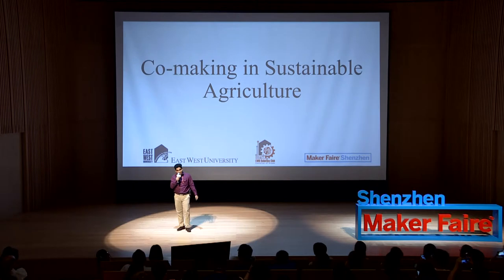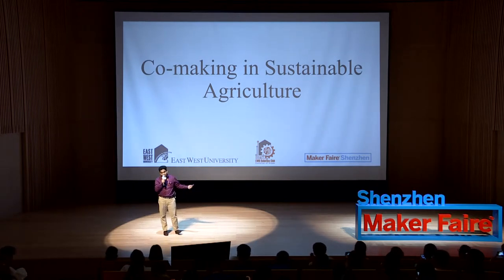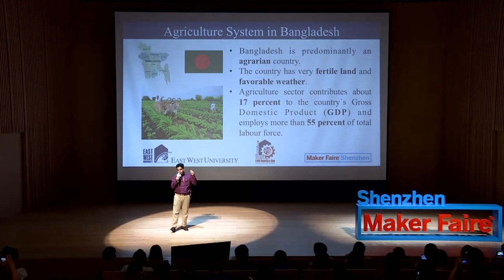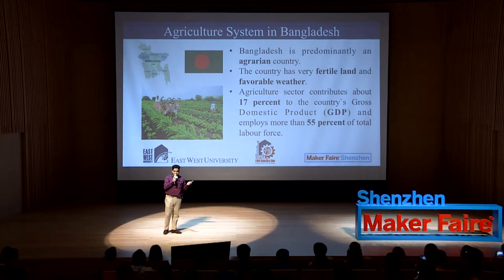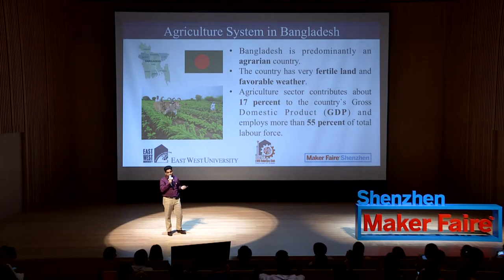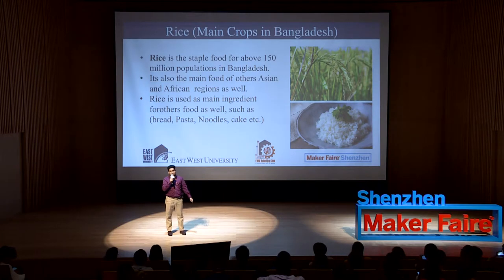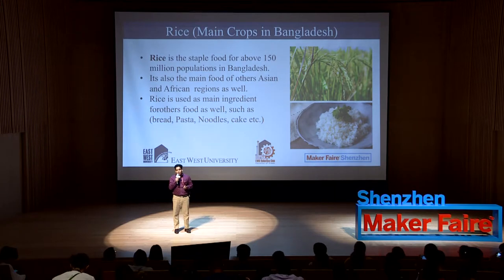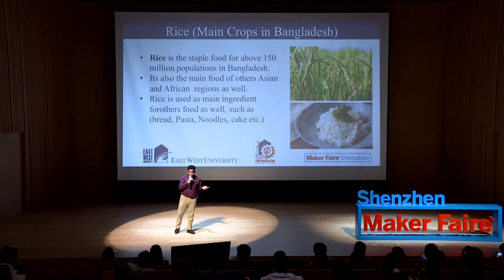Now, what about co-making in sustainable agriculture? I am presenting co-making in sustainable agriculture because this is important for us and our country. Bangladesh is most probably an agrarian country because of its favorable weather and very fertile land. The agriculture sector contributes around 17% to the country's gross domestic product, and around 55% of the total labor force comes from agriculture. Our main food is rice, and our main crop is also rice. Rice is also the main food of other African and Asian nations, and a main ingredient in bread, pasta, noodles, and cakes.